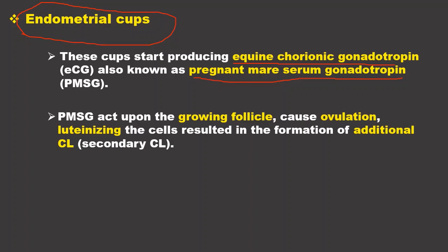When these hormones enter the circulation, they act upon follicles, stimulating their growth. They act upon growing follicles, causing ovulation and luteinization of the cells, resulting in the formation of additional corpus luteum. PMSG also causes luteinization of follicles that may fail to ovulate, so those follicles are luteinized to form progesterone-producing structures as well.